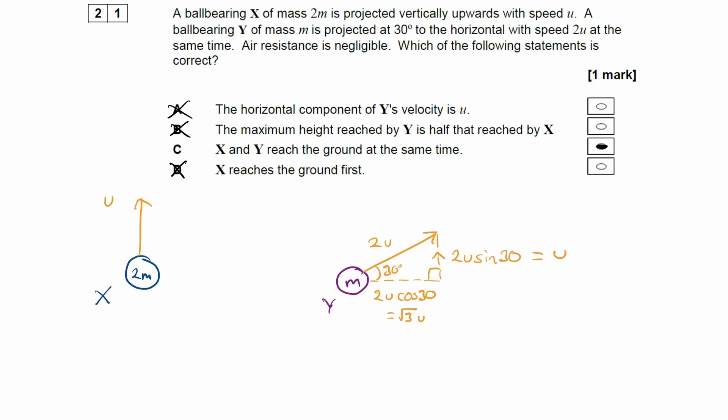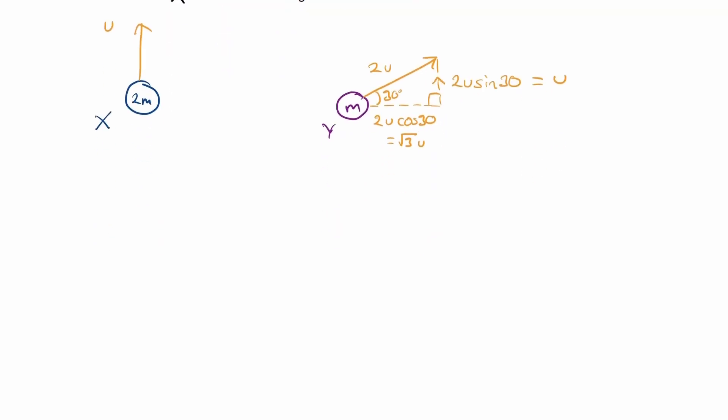So if that didn't make complete sense, then what we could do is we could draw out a SUVAT table and think about perhaps a couple of different scenarios. One where we're trying to work out the maximum height of the object and the other scenario where we're trying to work out the time taken to go from the floor all the way up and then back down again. So let's say we have the initial vertical velocity is u.